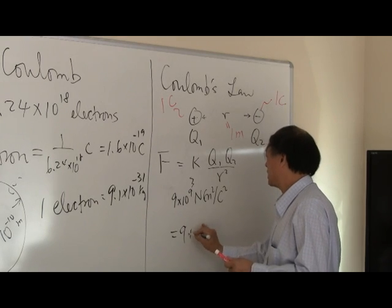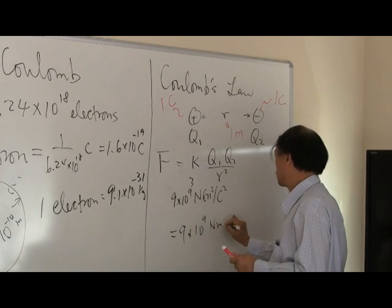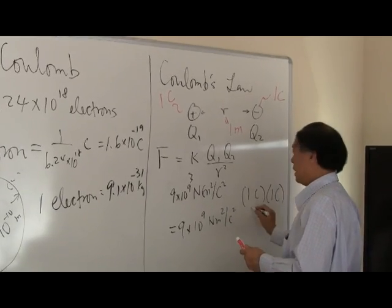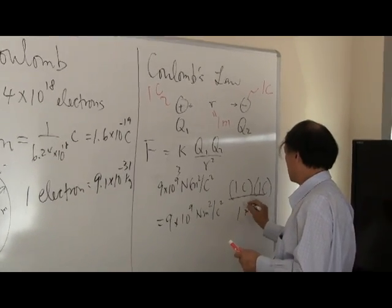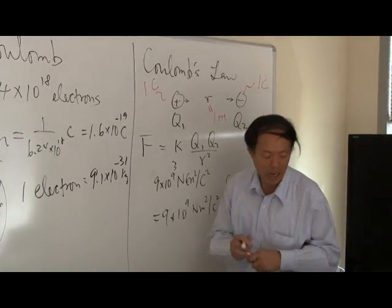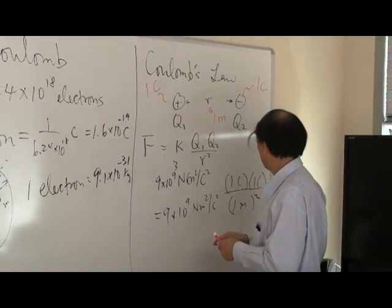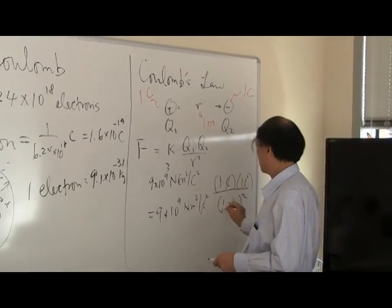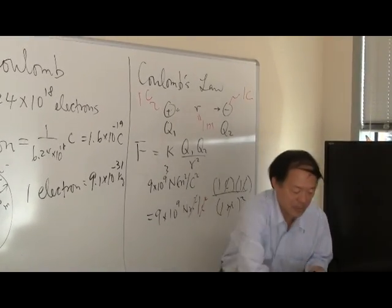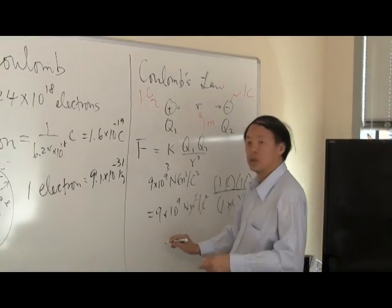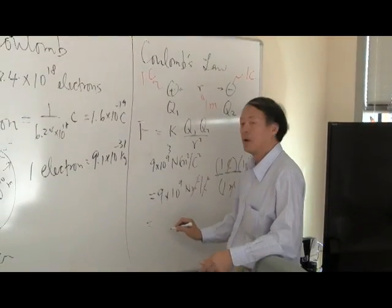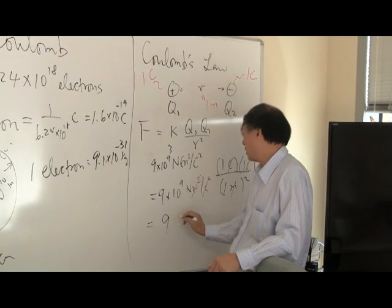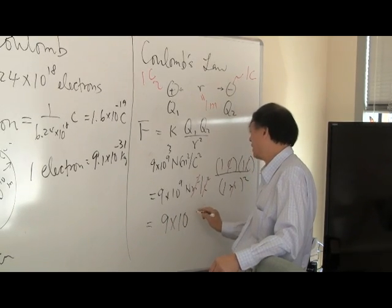9 times 10 to the 9 Newton coulomb squared times 1 coulomb divided by 1 meter squared. And what you have is